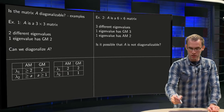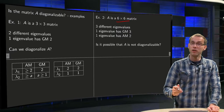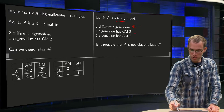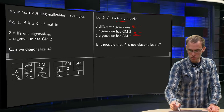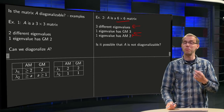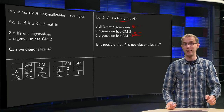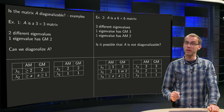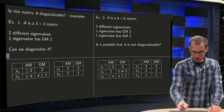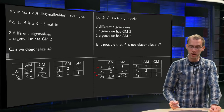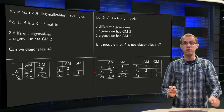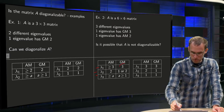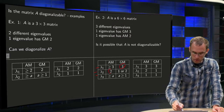Second example: a 6x6 matrix. We follow the same strategy. It is given that the matrix A has three different eigenvalues: one with geometric multiplicity equal to 3, and one with algebraic multiplicity equal to 2. The question is: would it be possible that A is not diagonalizable? We form our table again with three eigenvalues lambda 1, lambda 2, lambda 3, algebraic multiplicity in the second column and geometric multiplicity in the third. We put in our data: first eigenvalue with GM equals 3, second eigenvalue with AM equals 2.